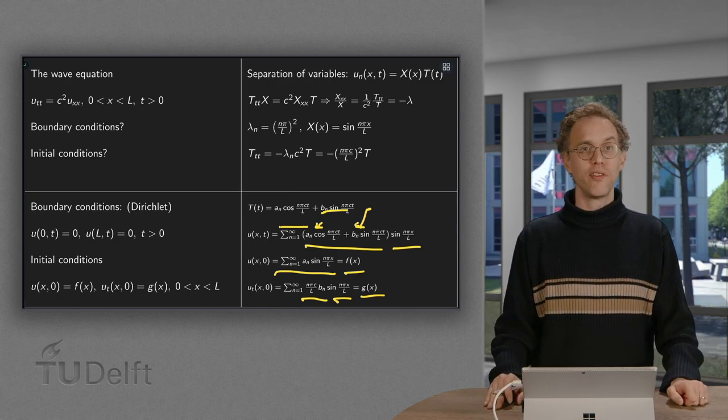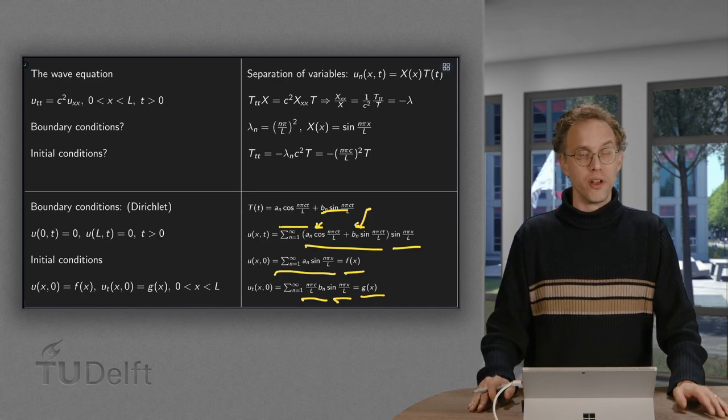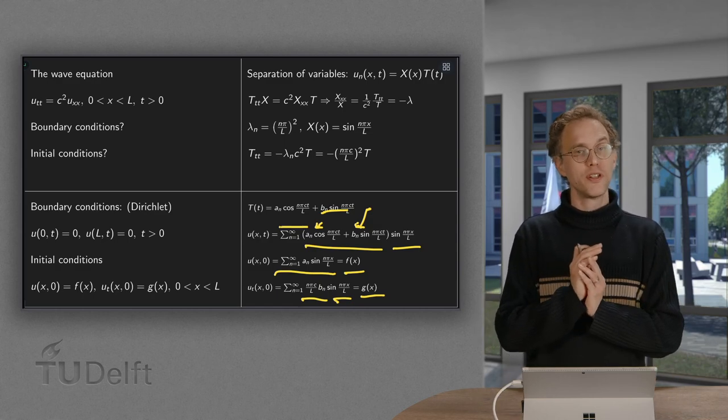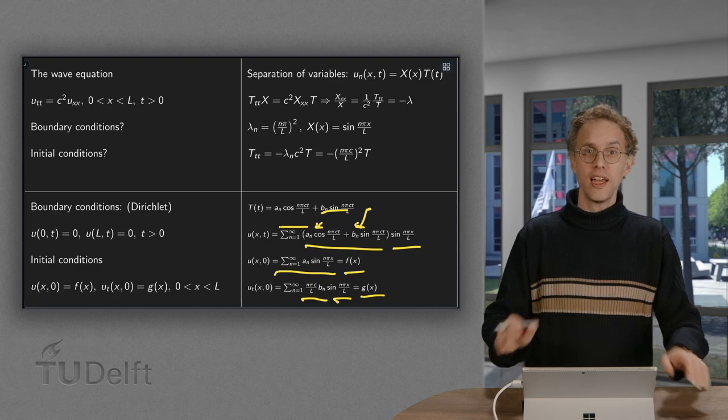And once we have the a_n and the b_n, we have our full solution. So this is the procedure. And in order to see really how it works, we need to specify, of course, f(x) and g(x). And that is something we will do in the next video.